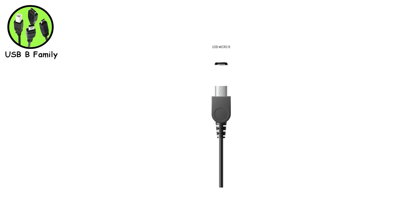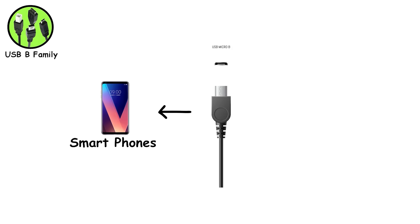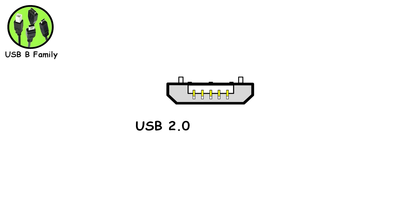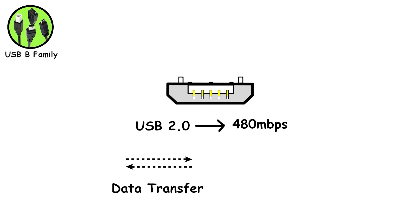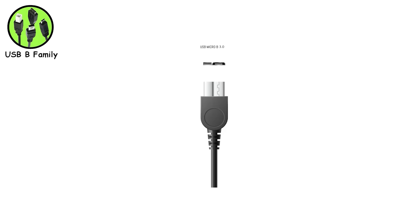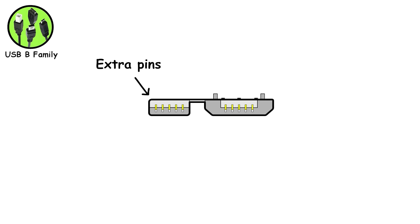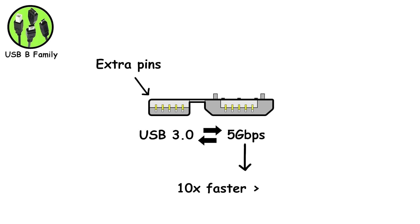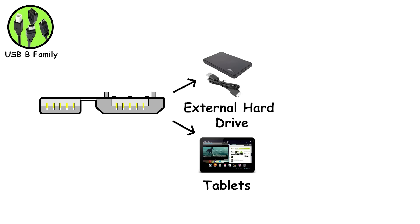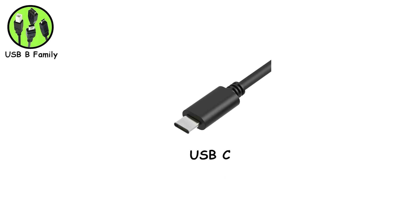Next came Micro-B, even flatter and smaller, taking over smartphones, tablets, and other compact gadgets. It handled USB 2.0 speeds and could do both data transfer and charging in one port — basically multitasking before multitasking was cool. Then there's Micro-B 3.0, which added extra pins on the side supporting USB 3.0 speeds up to 5 gigabits per second — 10 times faster than USB 2.0. You'd mostly find these on external hard drives, though they never became as common as regular Micro-B. Most people were just relieved when USB-C eventually replaced the whole awkward family.